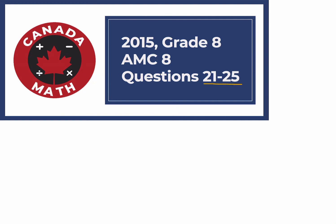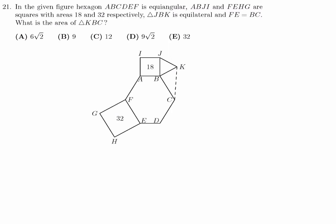Questions 21 through 25 on the 2015 grade 8 AMC 8. In the given figure, hexagon ABCDEF is equiangular. ABJI and FEHG are squares with area 18 and 32 respectively. Triangle JBK is equilateral. FE is equal to BC. What is the area of triangle KBC?